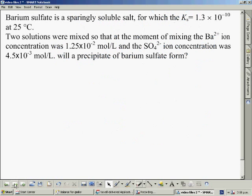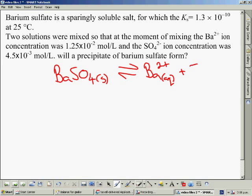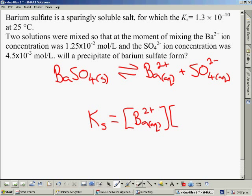There's a second example here where we need to predict if a precipitate would form. Once again, we're going to write the equation for the salt dissolving and write the KS expression. It might seem strange writing the equation for the salt dissolving when we're predicting a precipitate, but we need this equation because it's what the KS value relates to. We're going to ask ourselves whether or not this equation will go backwards or not.